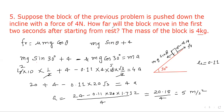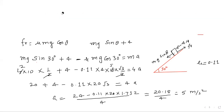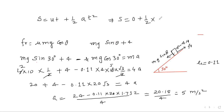Now we need to find how far the block will travel in the first two seconds. Applying s = ut + ½at²: starting from rest u = 0, a = 5, t = 2. So s = ½ × 5 × 4 = 10 meters. That is our answer.